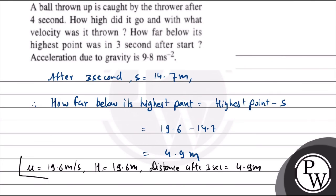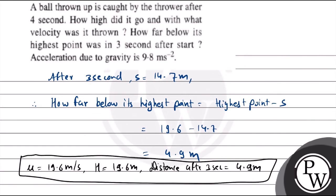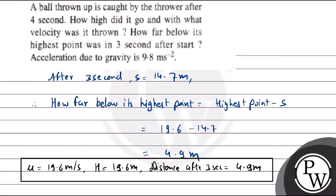Therefore our final answers are: initial velocity = 19.6 m/s, maximum height = 19.6 meters, and distance below the highest point at 3 seconds = 4.9 meters. I hope you understand it well — best of luck!